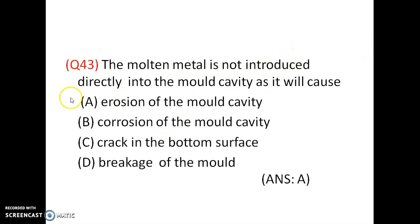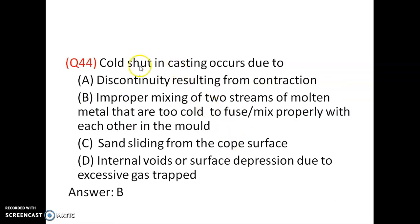Molten metal is not introduced directly into the mold cavity because it would cause erosion of the mold cavity, so it is passed through the gating system — option A is correct. Cold shed in casting defects occurs due to improper mixing of two streams of molten metal that are too cold to fuse properly — option B is correct.